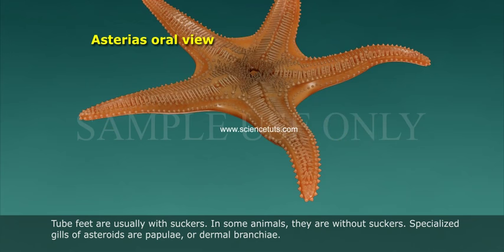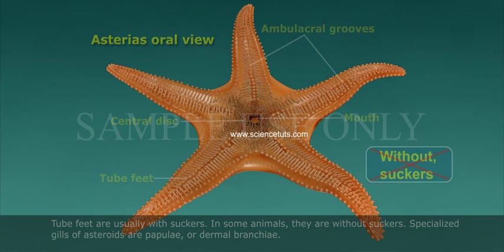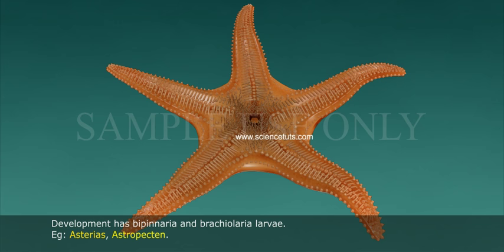Tube feet are usually with suckers; in some animals they are without suckers. Specialized gills of asteroids are papulae or dermal branchiae. Development has Bipinnaria and Brachiolaria larvae. Examples: Asterias, Astropecten.